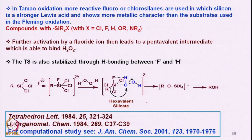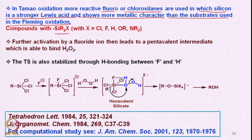In Tamao oxidation, the more reactive fluoro- or chlorosilanes are used, in which silicon is a stronger Lewis acid and shows more metallic character than the substrates used in Fleming oxidation. So you have a substrate like SiR₂X where X is chlorine, fluorine, hydrogen, OR, or NR₂. These are the groups used on silicon while carrying out the Tamao type of oxidation, which we will now discuss in detail.